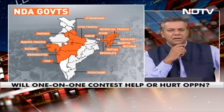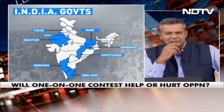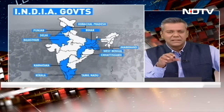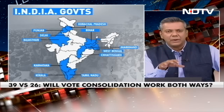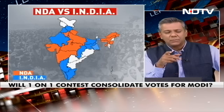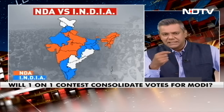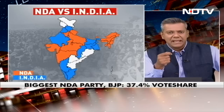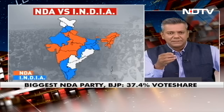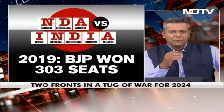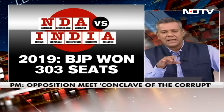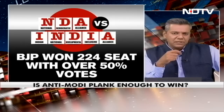Here is a map projection of the states presently governed by the NDA or its allies, shown in orange. Now let's show those states governed by opposition parties. Bringing all of this together gives an all-India picture of who controls what. There are a couple of states left in white — not governed by either the India Alliance or the NDA: Telangana, Andhra Pradesh, Orissa, and Jammu and Kashmir. Quick summary: in 2019, the BJP won 303 seats.